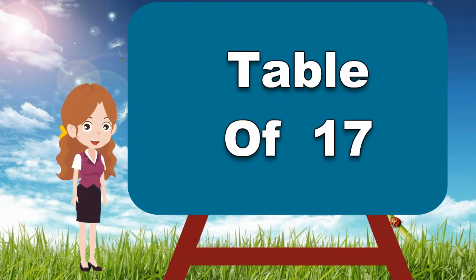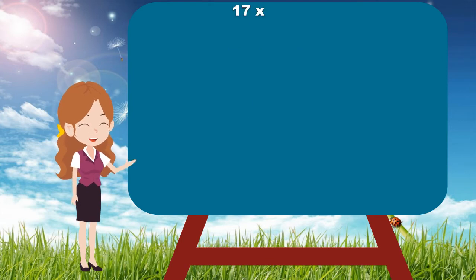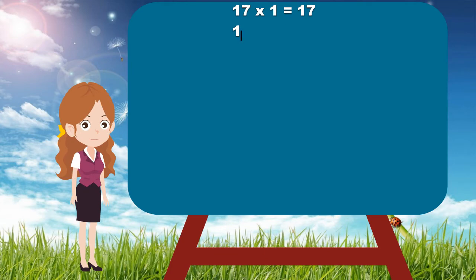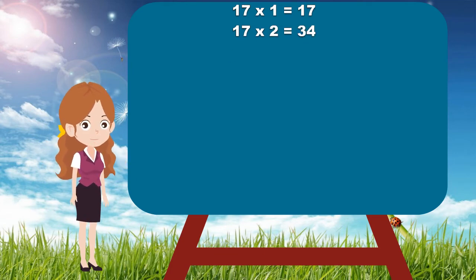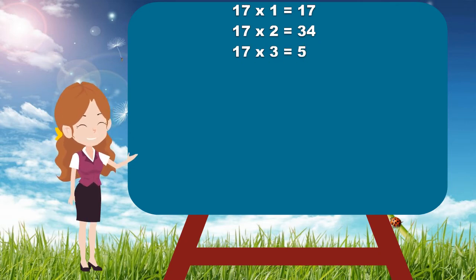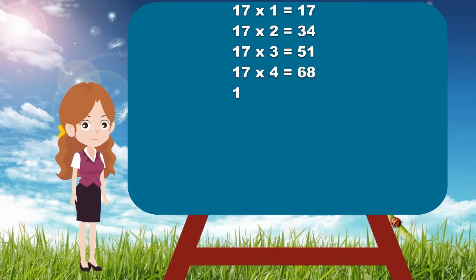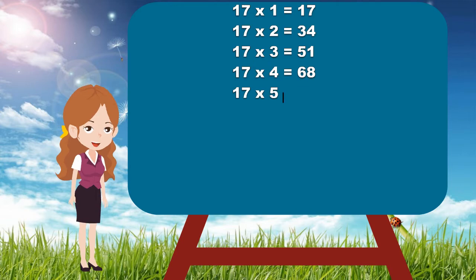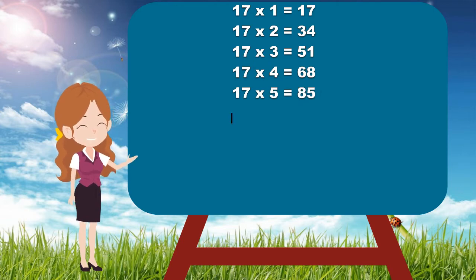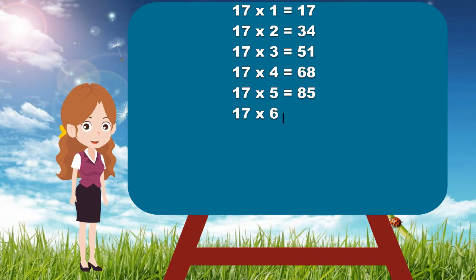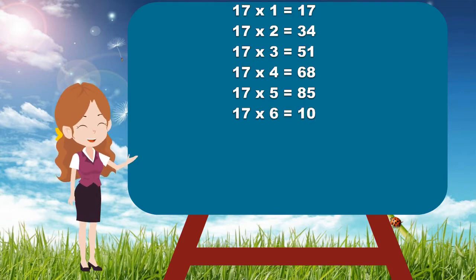Let's start. 17 ones are 17, 17 twos are 34, 17 threes are 51, 17 fours are 68, 17 fives are 85, 17 sixes are 102,